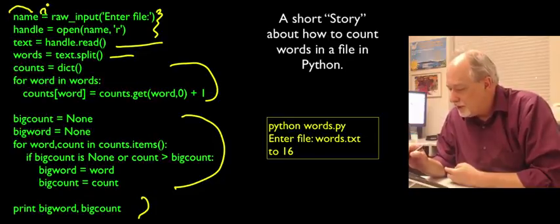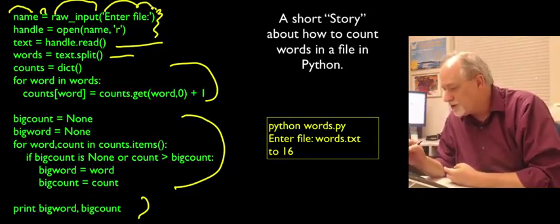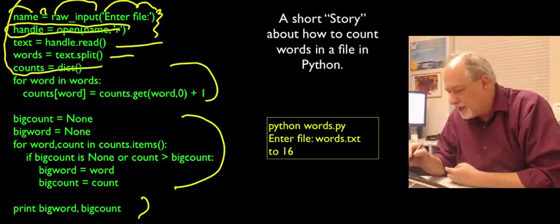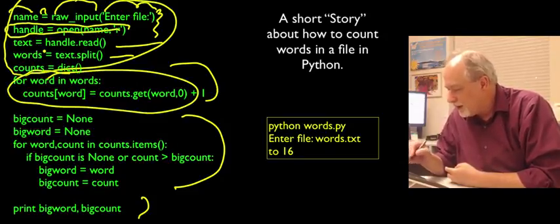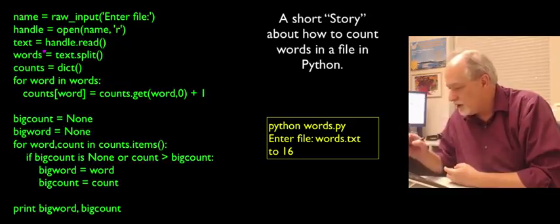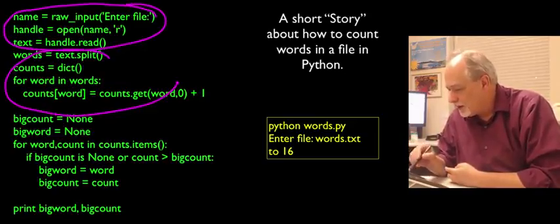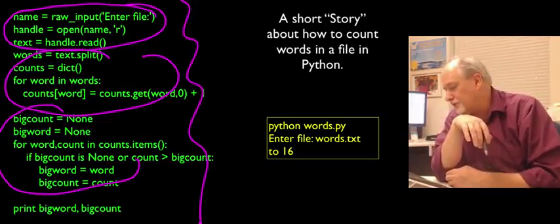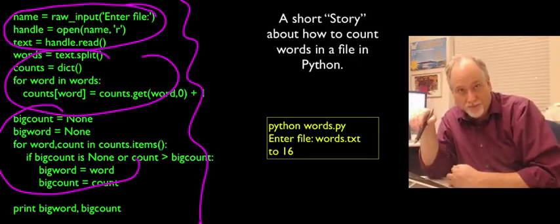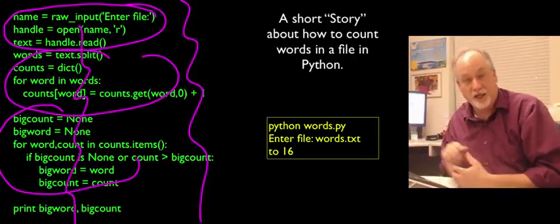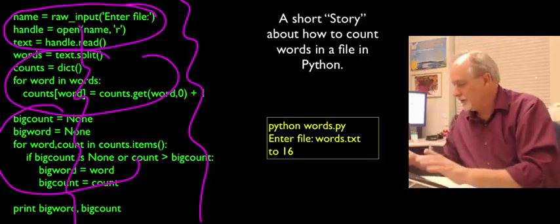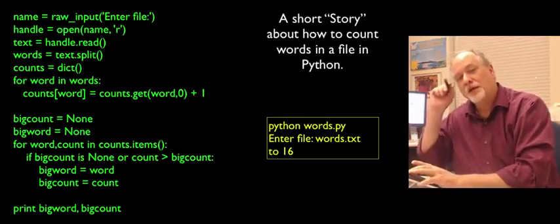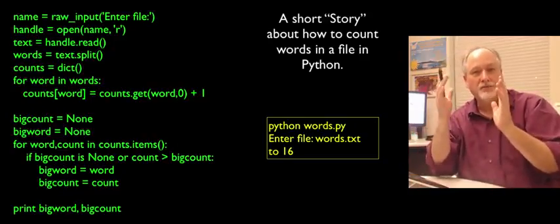So here is, again, that same program, that same program of how to count the most common word in a file. And I mentioned before that it starts by opening the file. It reads the data from the file, splits it into words, counts them all up, and then finds the biggest one and then prints it out. So, name is like a word. Equals is another word. Raw is a word. All these things are words. Each of these things is like a sentence. There are blocks of stuff, they're kind of paragraphs. There's kind of a paragraph, paragraph. Here's like a paragraph and a paragraph and a paragraph. And then at the end of the day, once you kind of understand it, and you will understand this before it's all over, this is kind of like a story. It holds together. It has a beginning, a middle, and an end.